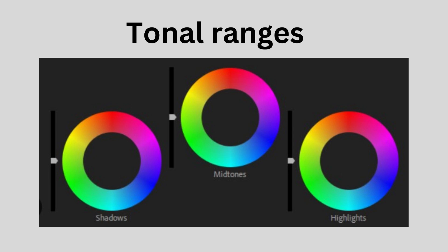Tonal ranges can play a crucial role in color grading. The tonal range refers to the distribution of brightness levels in an image, ranging from shadows to highlights. By adjusting the tonal range, we can control the overall contrast and mood of a scene.